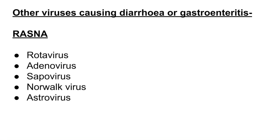In the mnemonic RASNA: R stands for Rotavirus, A stands for Adenovirus, S is Sapovirus, N is Norovirus, and A is Astrovirus. These are the viruses that can cause diarrhea or viral gastroenteritis.